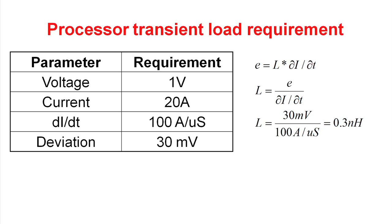Here's an interesting bit of math. We started with the equation E equals L dI/dt, and used some values from our table to do a quick calculation. We determined the allowable inductance between the power supply and the load for these requirements. The inductance equals 30 millivolts divided by 100 amps per microsecond, or the allowable inductance is 0.3 nanohenries.